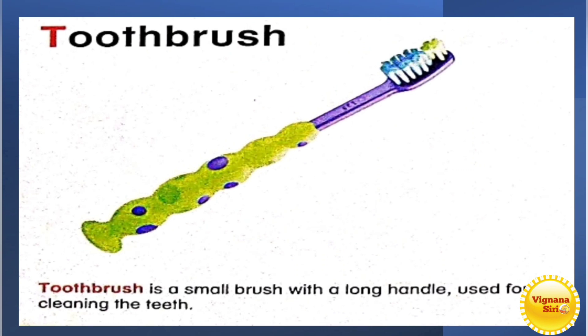The next one is T for toothbrush. It's a small brush with long handle used for cleaning the teeth. How many of you will brush your teeth twice a day? They are very good. So you have to brush your teeth twice. Then only your teeth will be very healthy. There will be no issue with your teeth early morning and also before going to bed. You have to brush.